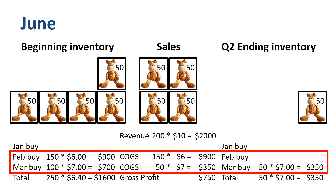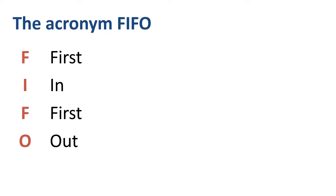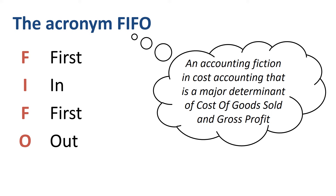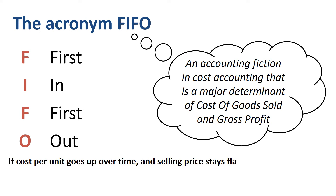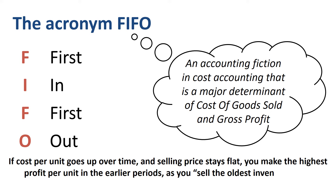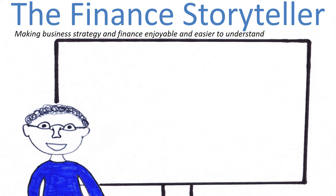Summary and Conclusion: FIFO is an accounting fiction in cost accounting that is a major determinant of cost of goods sold and gross profit. If cost per unit goes up over time and selling price stays flat, you make the highest profit per unit in the earlier periods, as you apply the fiction of selling the oldest inventory first.